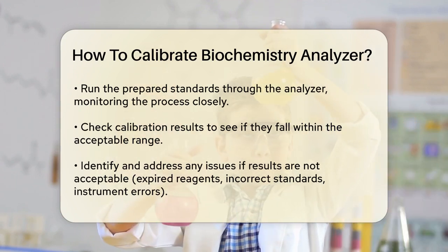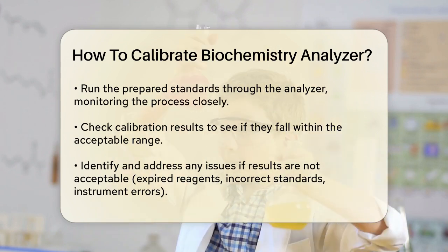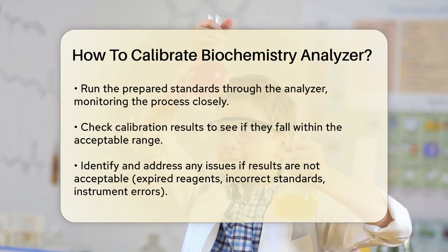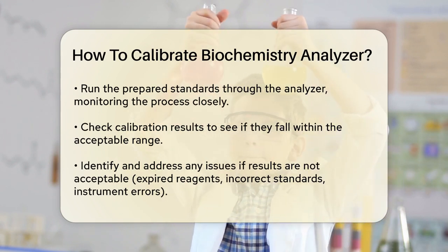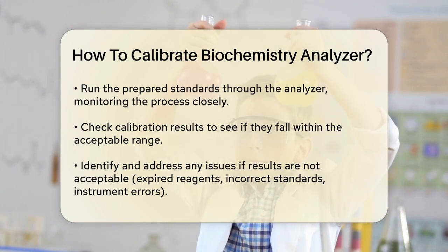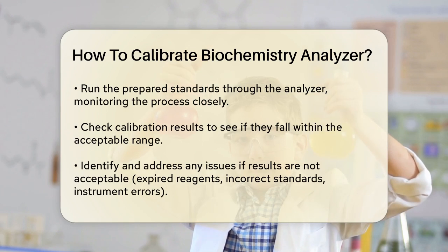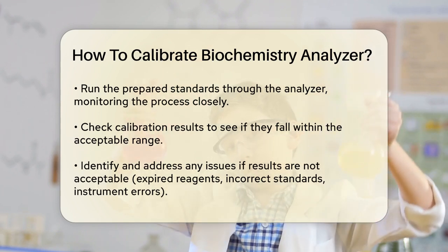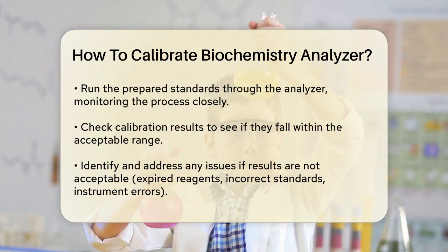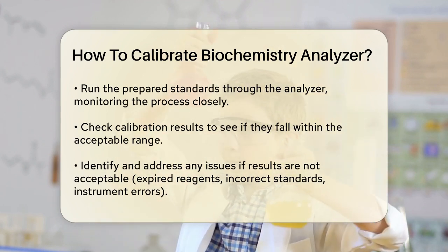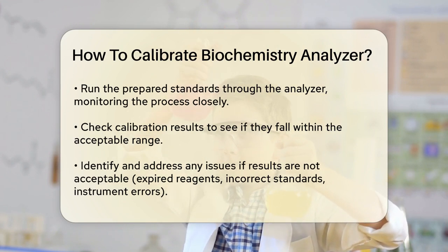If the results are not within this range, you need to identify and address any potential issues such as expired reagents, incorrect standards, or instrument errors. If everything looks good, the next step is to run quality control (QC) samples. These samples act as a secondary check to ensure the analyzer is providing accurate and reliable results, verifying that the calibration was successful and that the system is functioning correctly.